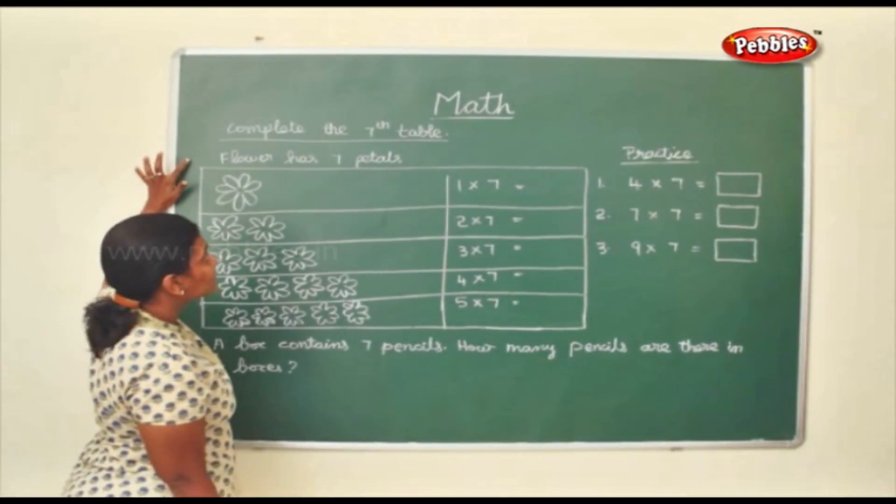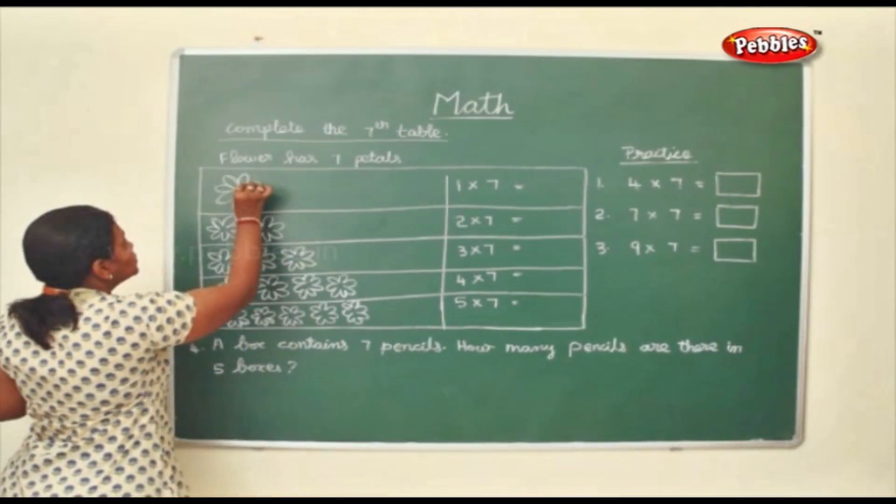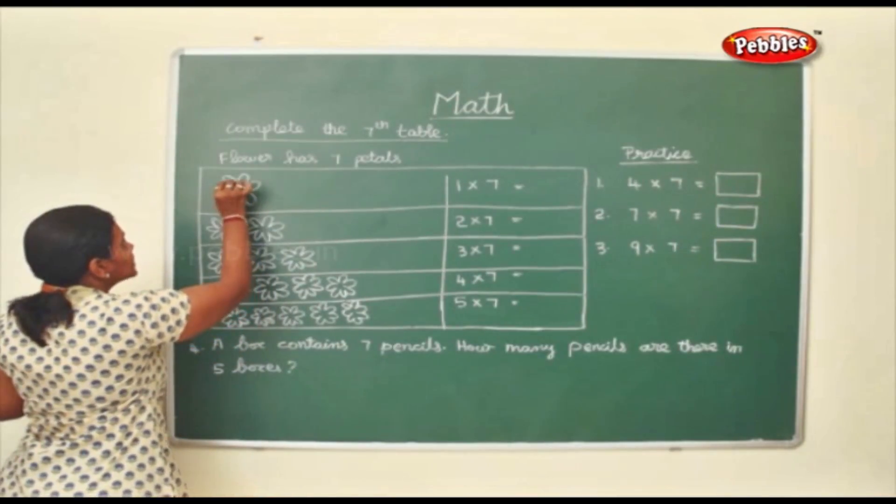Now we shall complete the 7th table. A flower has 7 petals. 1, 2, 3, 4, 5, 6 and 7.